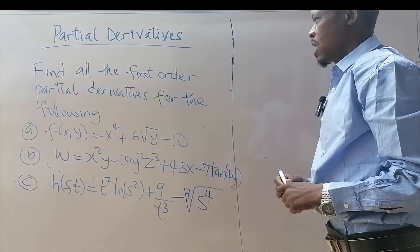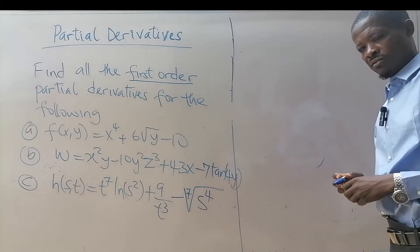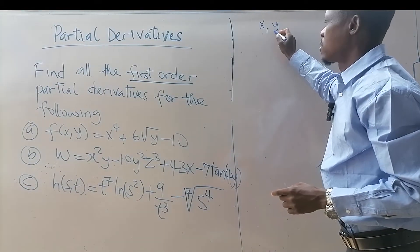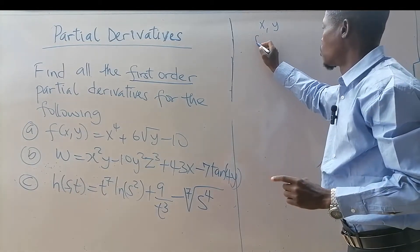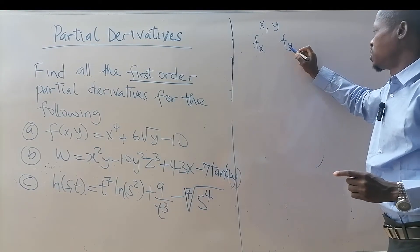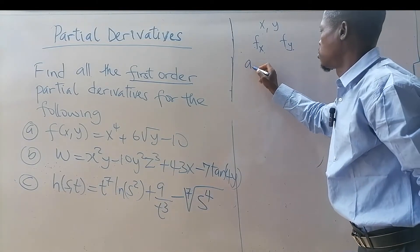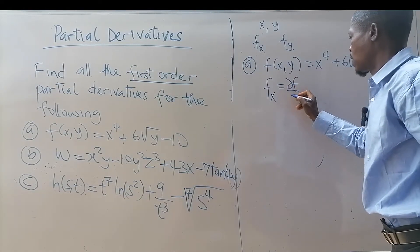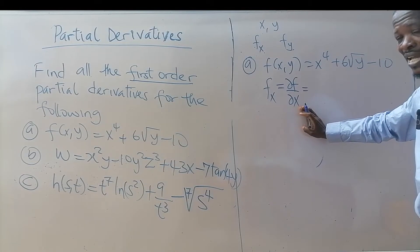For the first one, we need the first-order partial derivatives. The variables in the function are x and y, so we need f subscript x and f subscript y. Let's go straight to the solution. f subscript x is the same as del f over del x.